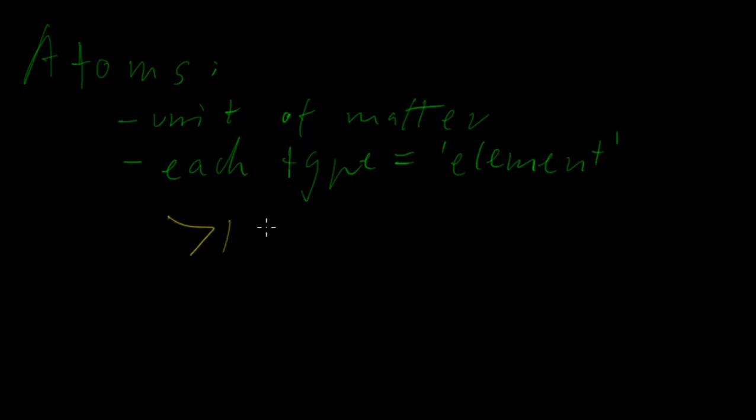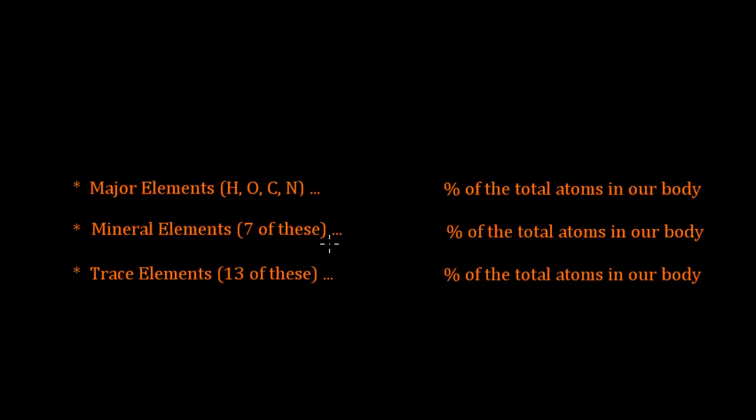There are more than 100 of these elements. However, only 24 are essential to humans, to our bodies. Let's have a quick look at what those essential ones are. We can break the essential elements down into the major, mineral, and trace elements. The major elements account for more than 99% of the total atoms in our body. Mineral elements are 0.7%, and trace elements are less than 0.01%. The vast majority of the atoms in our body are hydrogen, oxygen, carbon, and nitrogen. These ones here are really quite important to us.